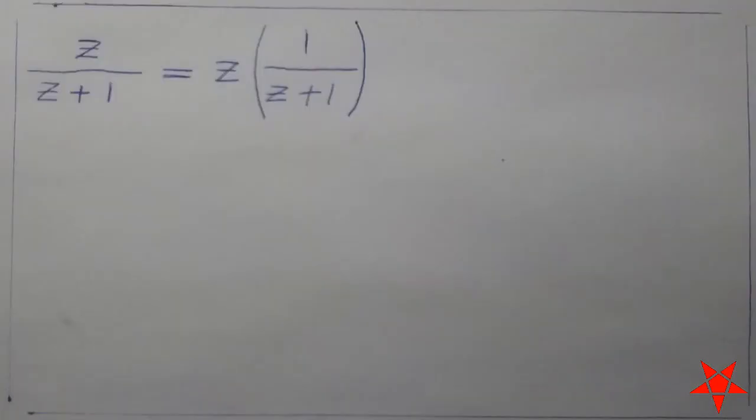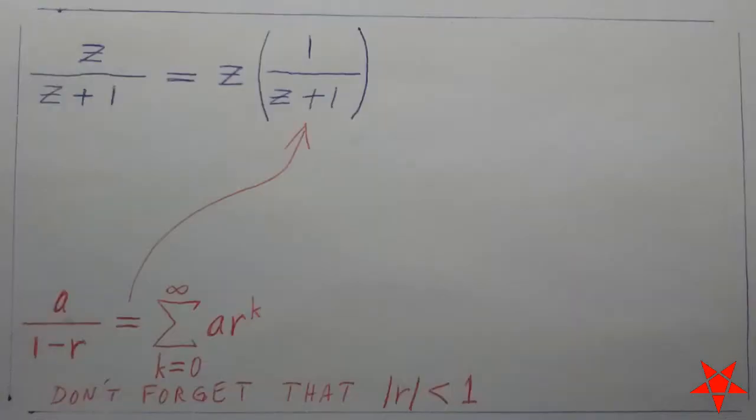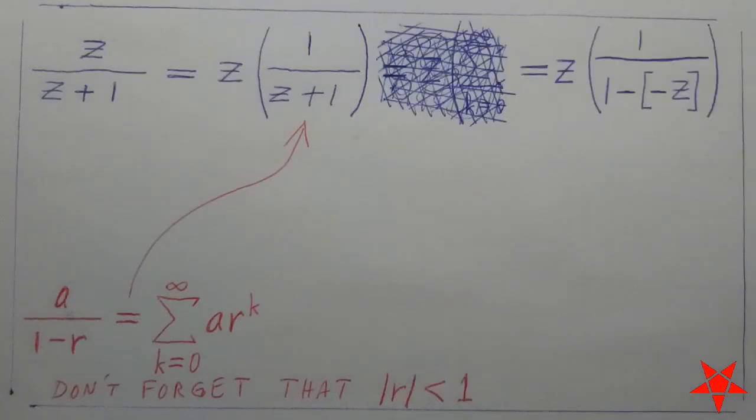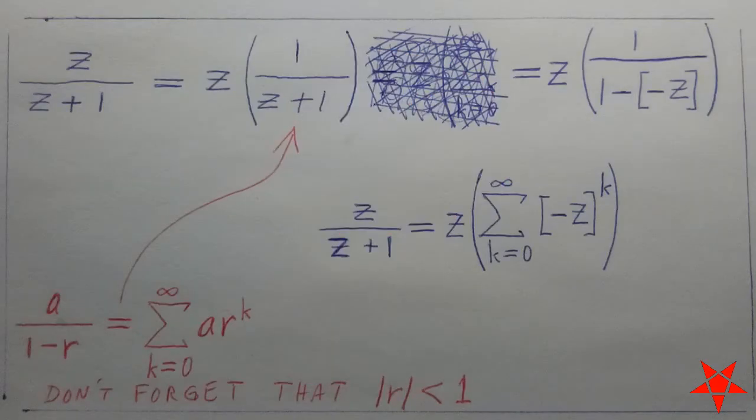Now if we factor out the z in the numerator, we then see that the remaining term roughly fits the form of a geometric series, and as stated in the previous episode, failure to track minus signs is still death.